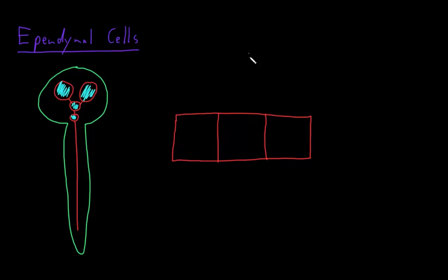So let's say that this is the side facing the cerebrospinal fluid, which I'll just write as CSF for short, for cerebrospinal fluid. And that this side faces the interstitial fluid of the central nervous system, all the fluid between the cells of the brain and the spinal cord.